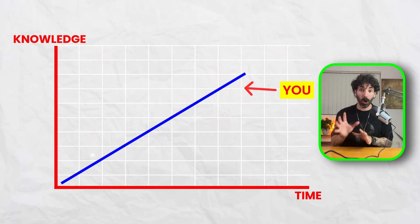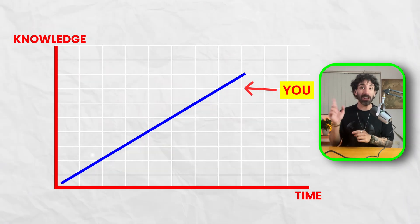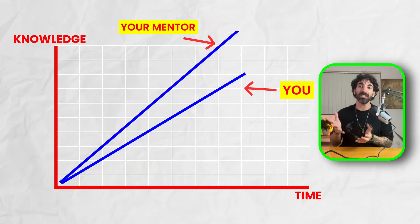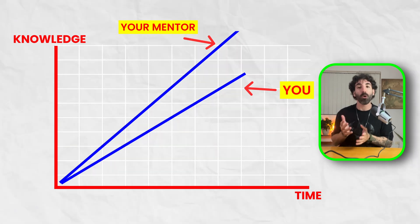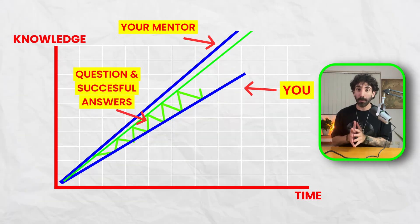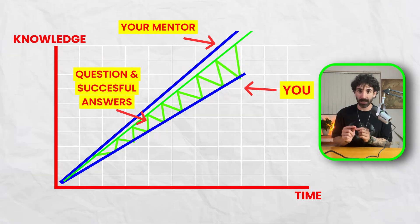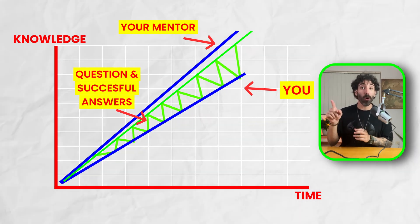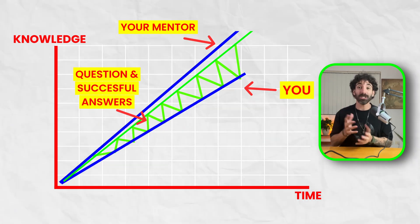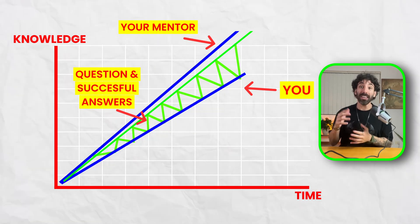This might seem trivial, but trust me, it's extremely important for your growth. Imagine the relationship between knowledge and time for you is a linear graph. The line for your mentor or senior engineer is steeper because they obviously have more knowledge than you. You grow faster by listening to them and asking questions, so every proper answer you get steps your knowledge line up a little — until eventually you know as much or even more than that person. Most engineers, especially juniors, ask vague questions and expect perfect answers. But if you want good answers, you need to give context.